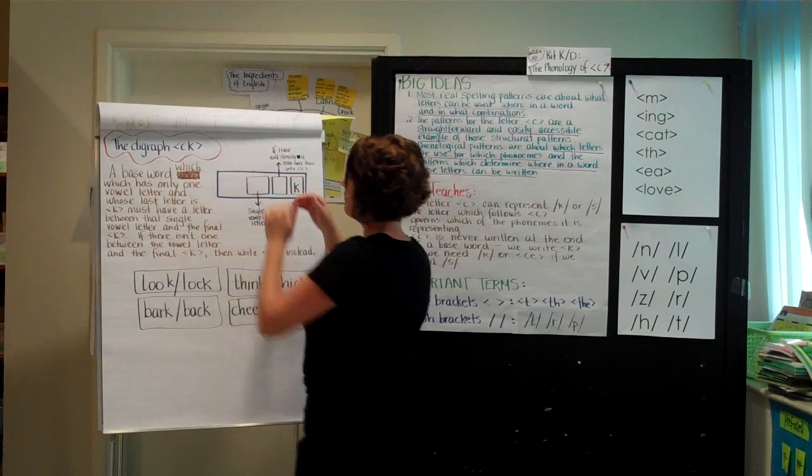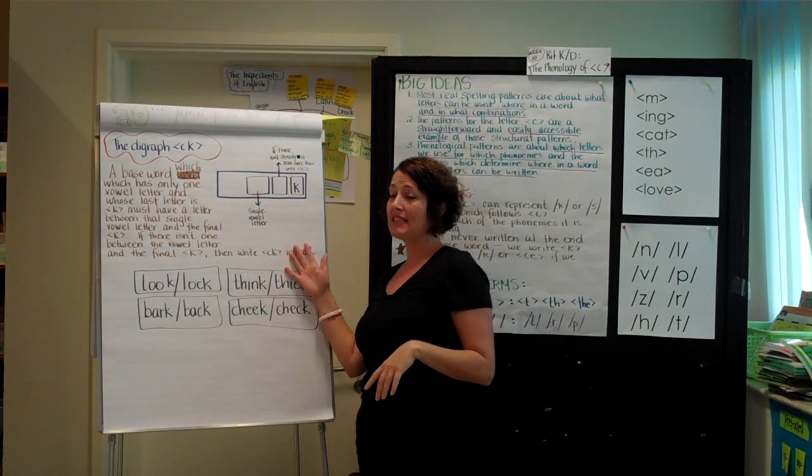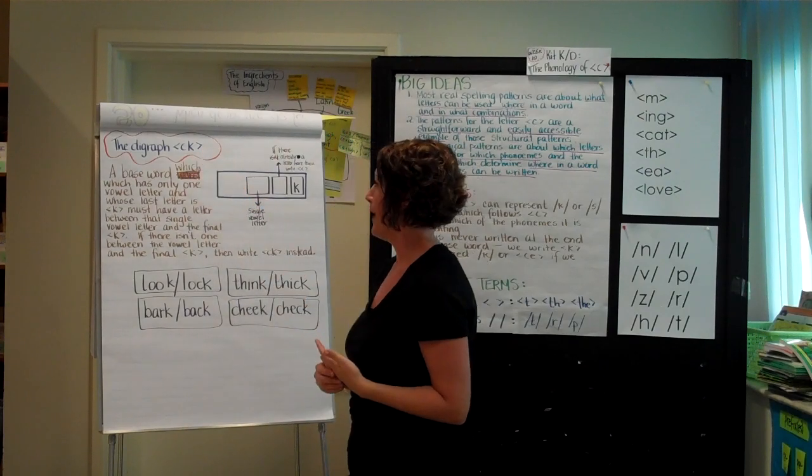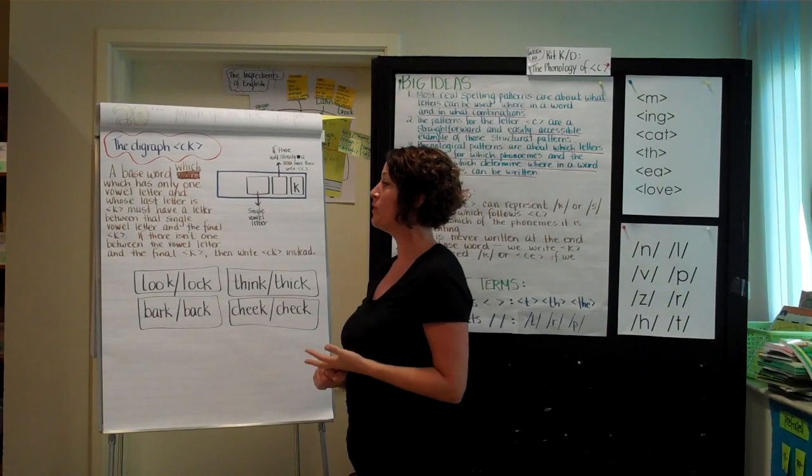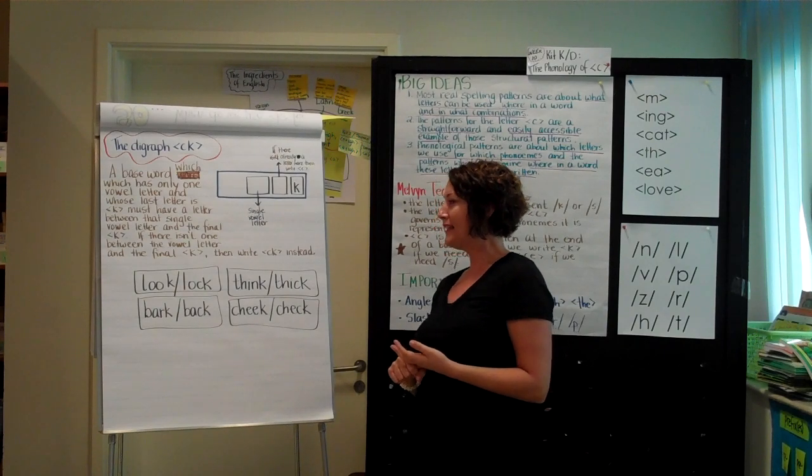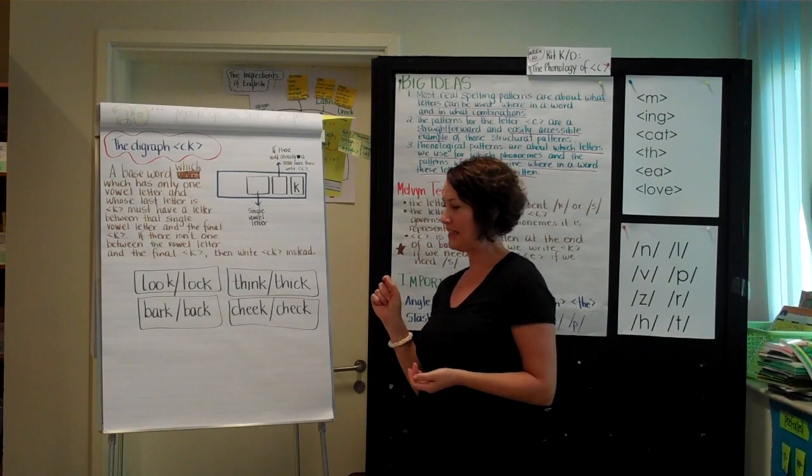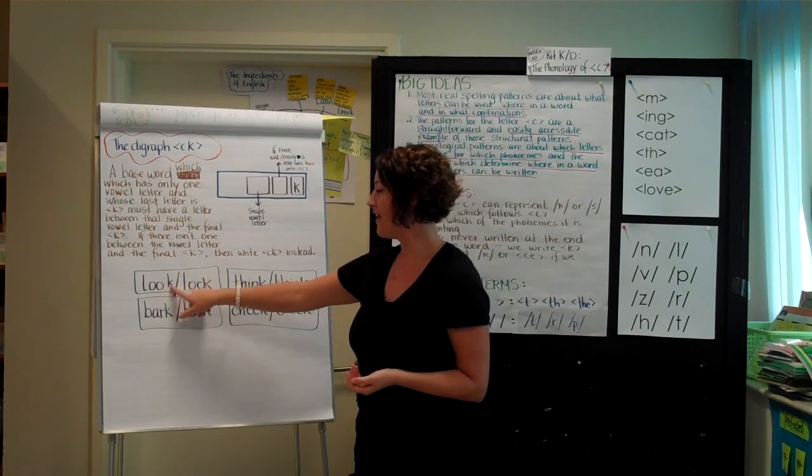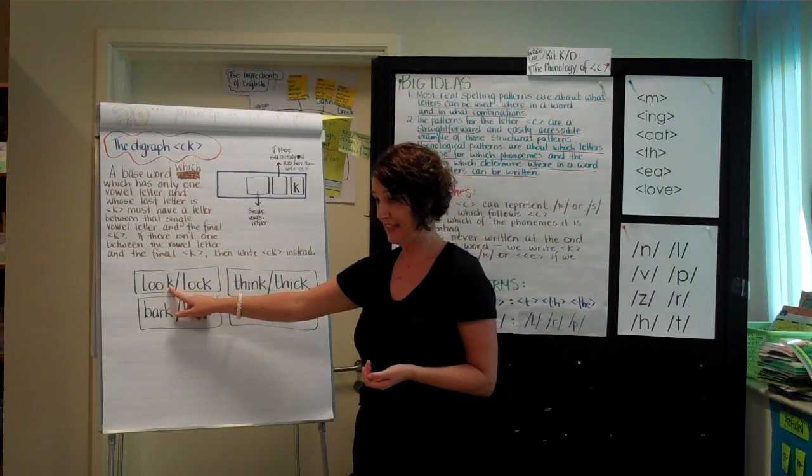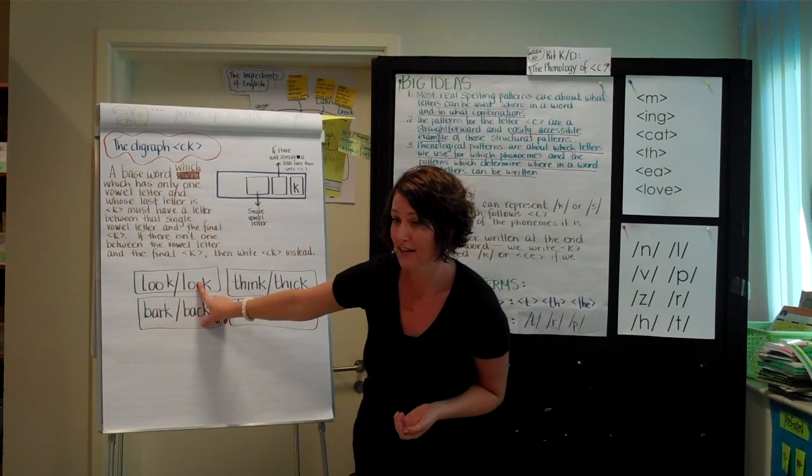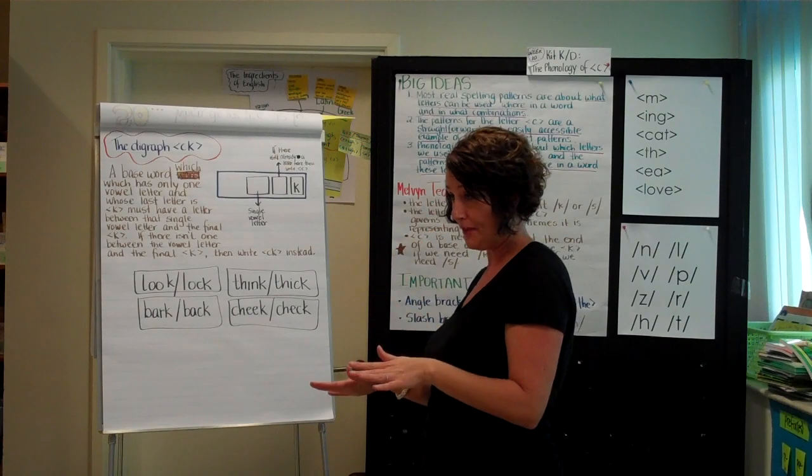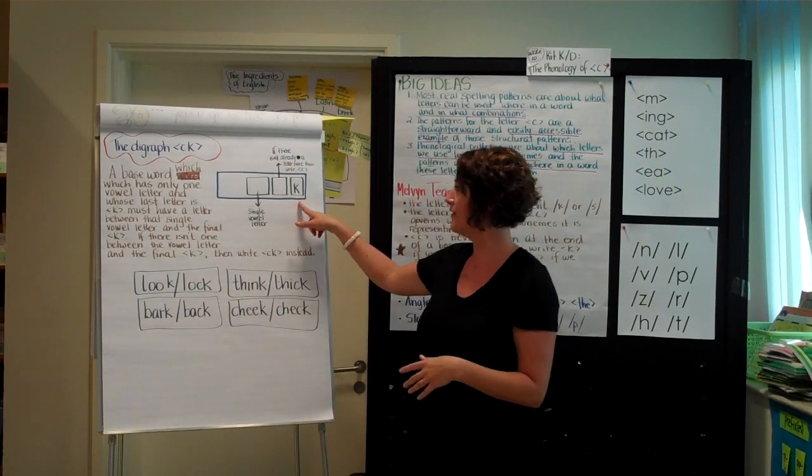The last thing he does in that theme that I didn't really touch on with the first group. This is covered in much more depth later. So I don't know that you have to do it this week. But in case it comes up or for your own information, the digraph CK. When does that come into play? And basically a base word which has only one vowel letter and whose last letter is /k/ must have a letter between that single vowel letter and the final K. If there isn't one between the vowel letter and the final K, then write CK instead. And here are some illustrations. So the final letter is /k/ here and this is a vowel letter, but there's a letter between them. This is a vowel letter, there's a letter between them. So this doesn't get a C. This one could say lock without the C, but it can't because of the vowel letter there has to be one between. So the C is added on. And this goes much more in depth later, so you don't have to do anything with it. But in case it comes up, you can play with this.